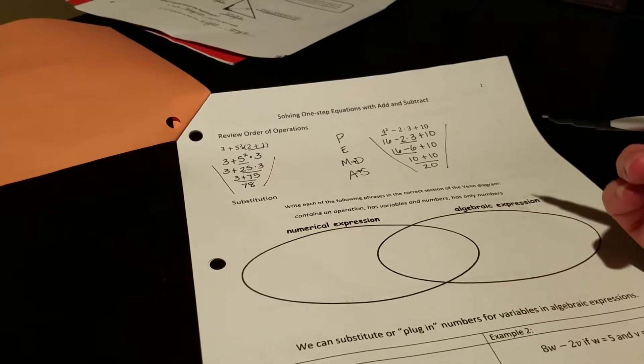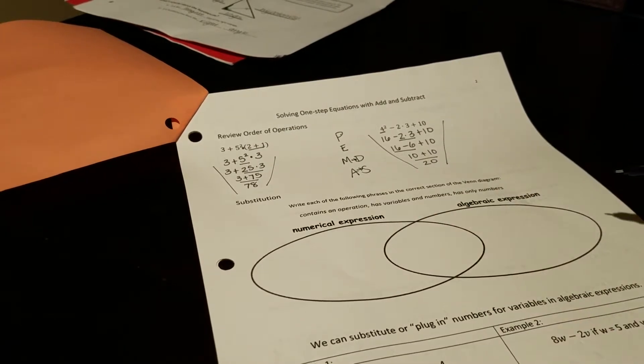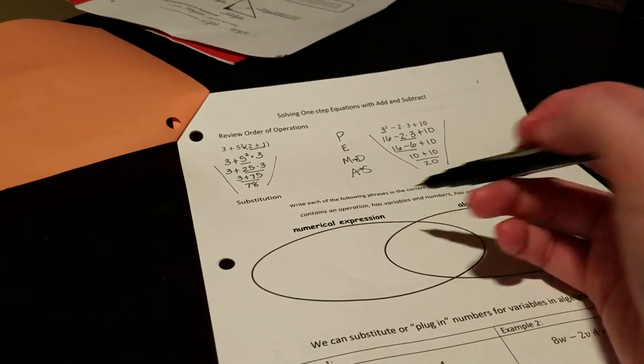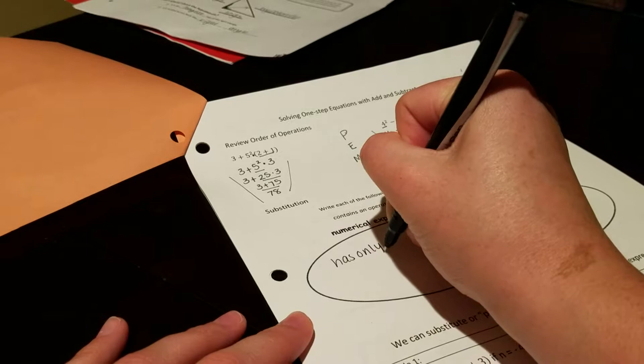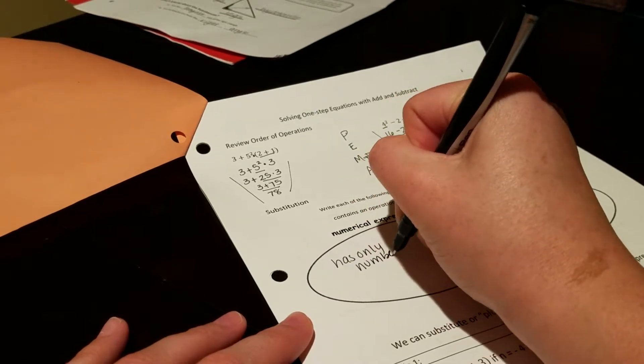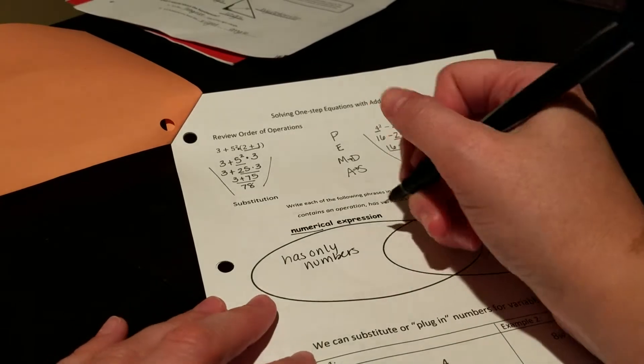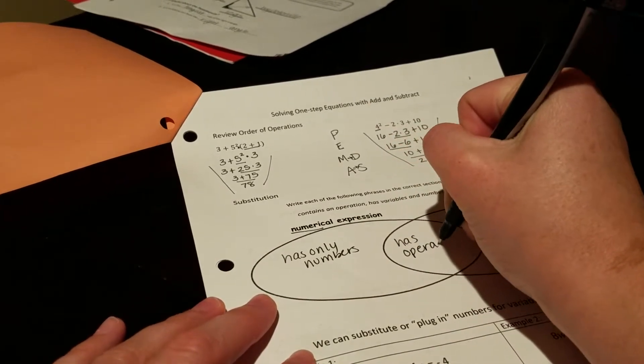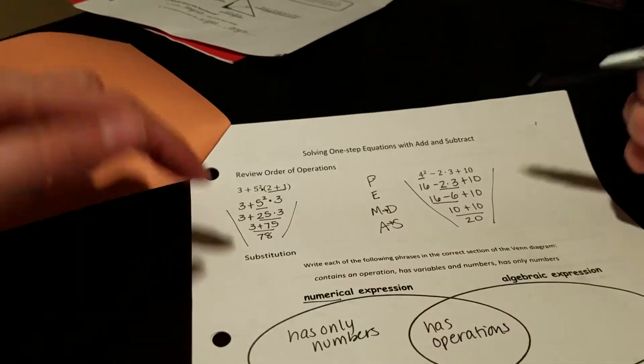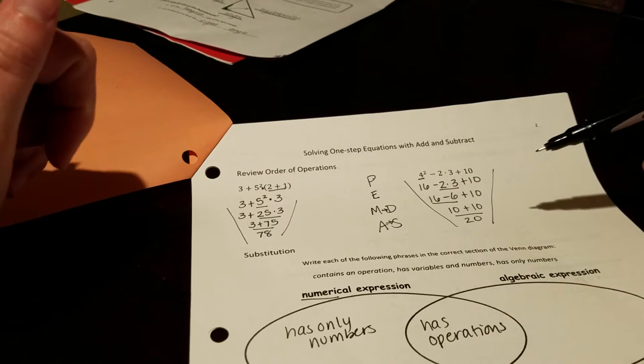The next part is a little bit about substitution. And it's really important for us to kind of know the difference between two different types of expressions. Numerical expressions has only numbers in them. And you're probably just hearing the word numerical kind of sounds like number. It also has operations. So basically the last two examples that we had up here, these are numerical expressions. They have numbers, they have operations in them.